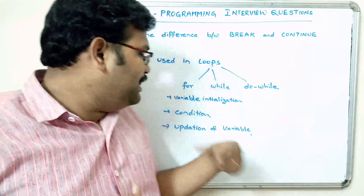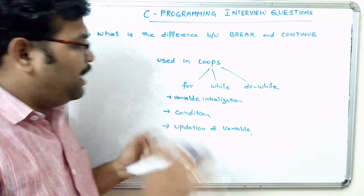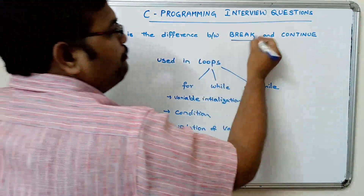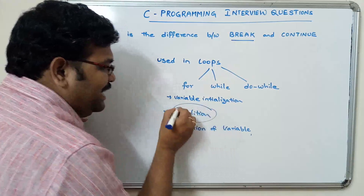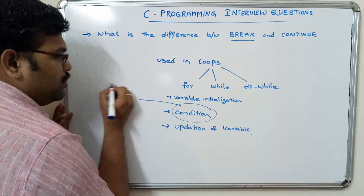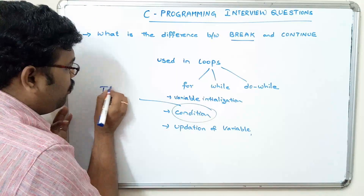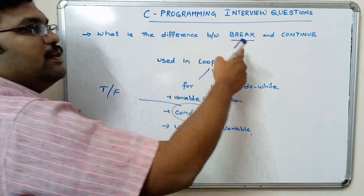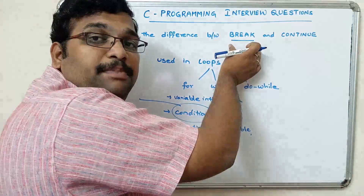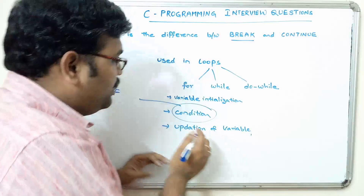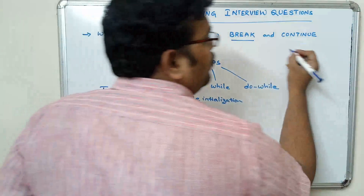In all these cases, the loop repeats until the condition becomes false. But here, in the case of break — irrespective of this condition, whether it is true or false — if the control executes this break statement, the control will come out from the loop.